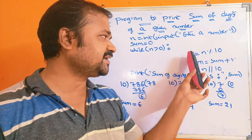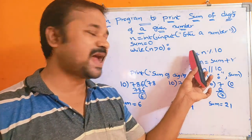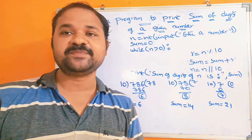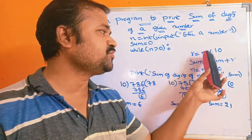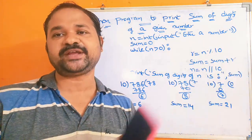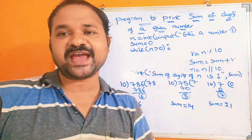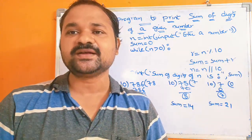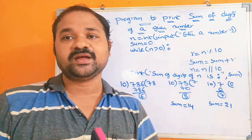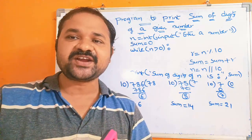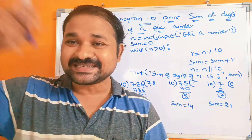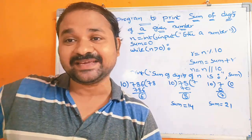First we have to calculate the remainder: r is equal to n modulo 10. If we calculate the remainder, we will get the last digit of that number. Let the number be 123 — then we will get the last digit of 123, which is 3.